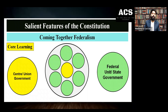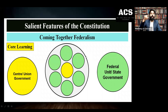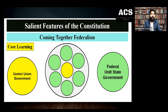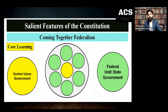This concept is known as coming together federalism. In this slide, you can see the yellow line — that is the central union government, the federal government in the US. And the green circles you can see in this slide are the federal units, or state governments.